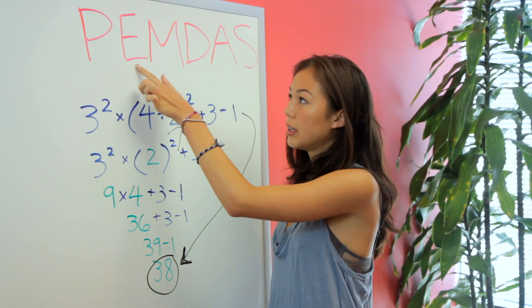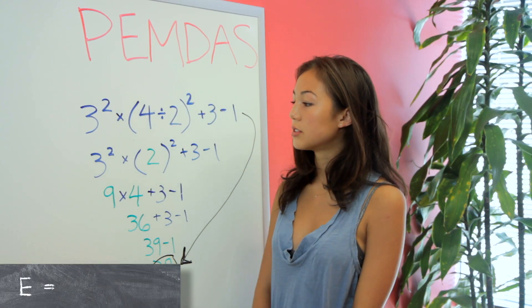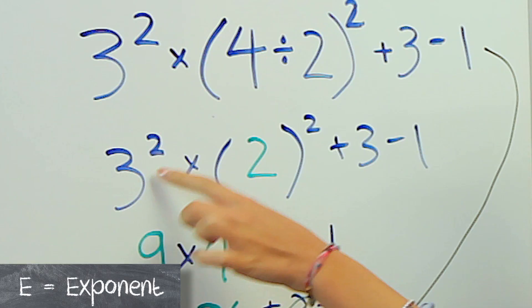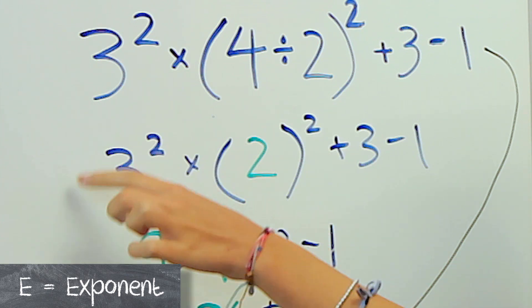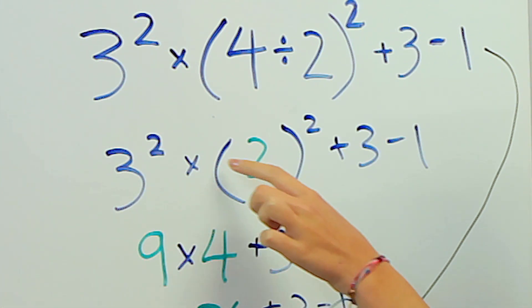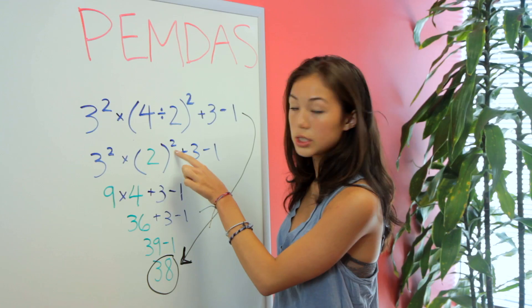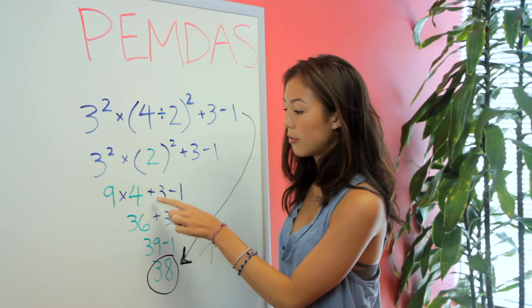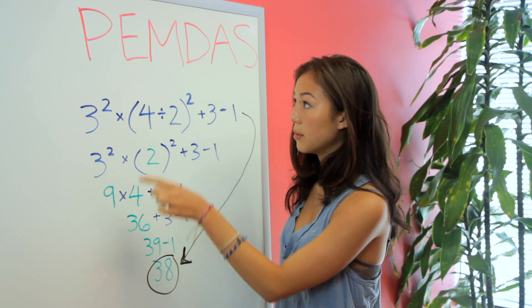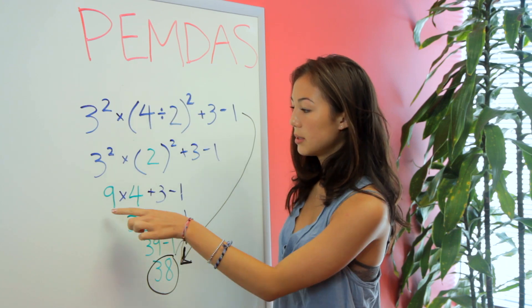Next step, we have E, which stands for exponent. And so we have two exponents here. This one is 3 squared, so we solve that: 9. And this one's 2 squared, so we have 4 here. That's the second step.